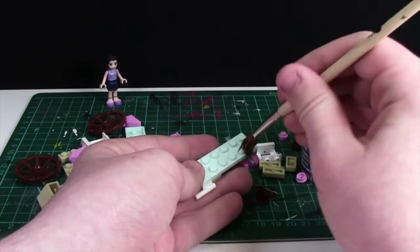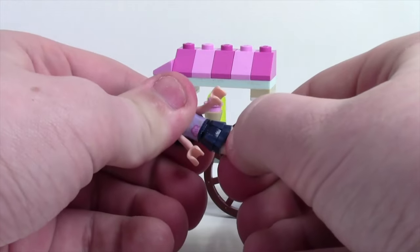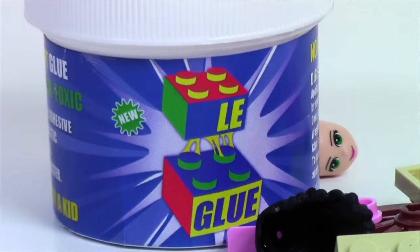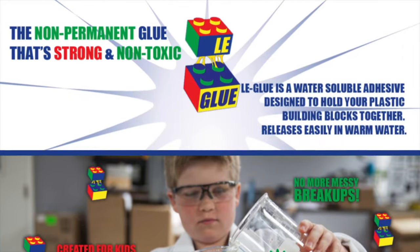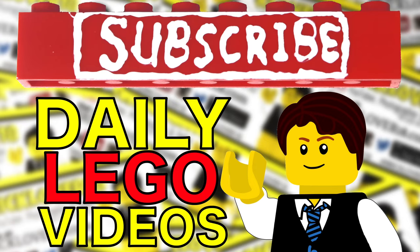Gluing your LEGO sets and mocks protects them from breaking, but it stops you from ever using those parts again. Leg Glue allows you to glue and un-glue your LEGO sets so you can keep them safe, but use the parts again in the future. Visit the link in the description to learn more and check out Leg Glue and all its glory in my Leg Glue video. Subscribe to BrickLover18 for more daily LEGO videos.